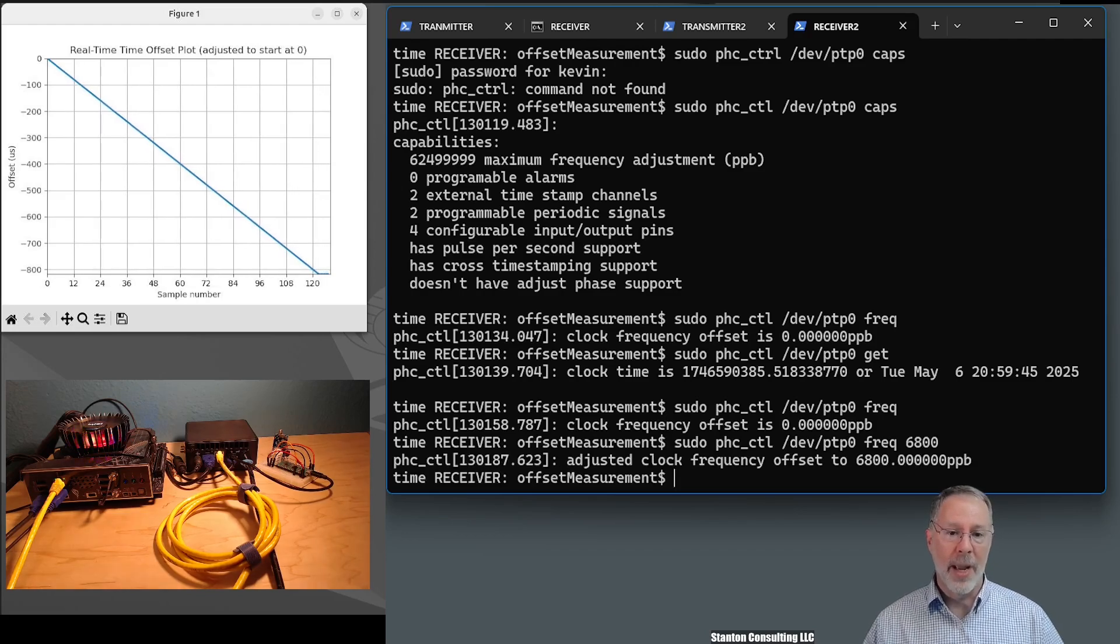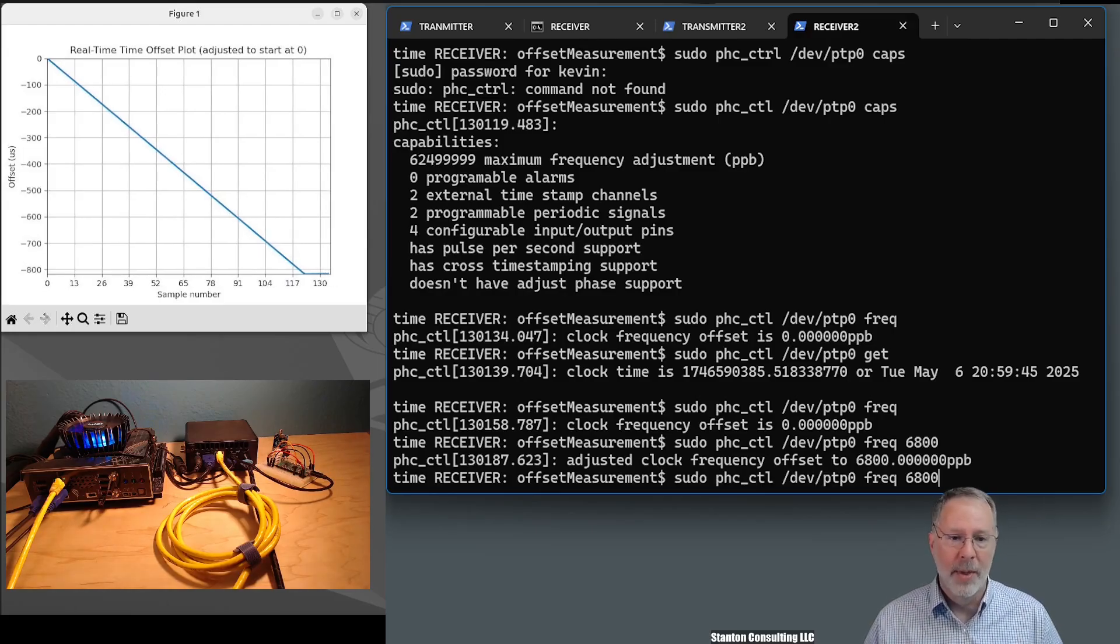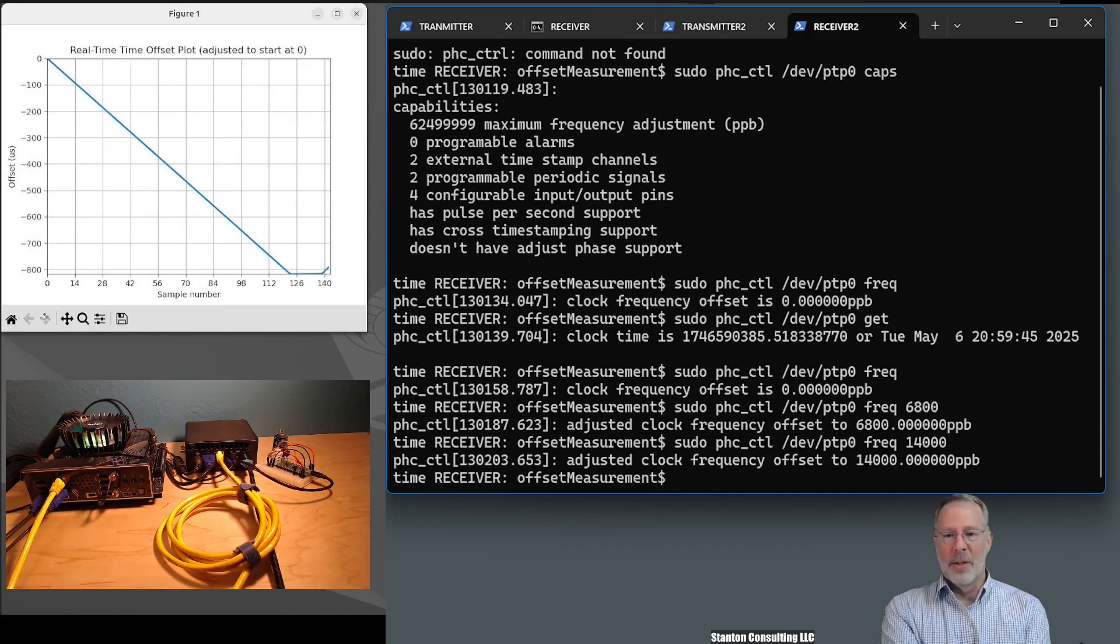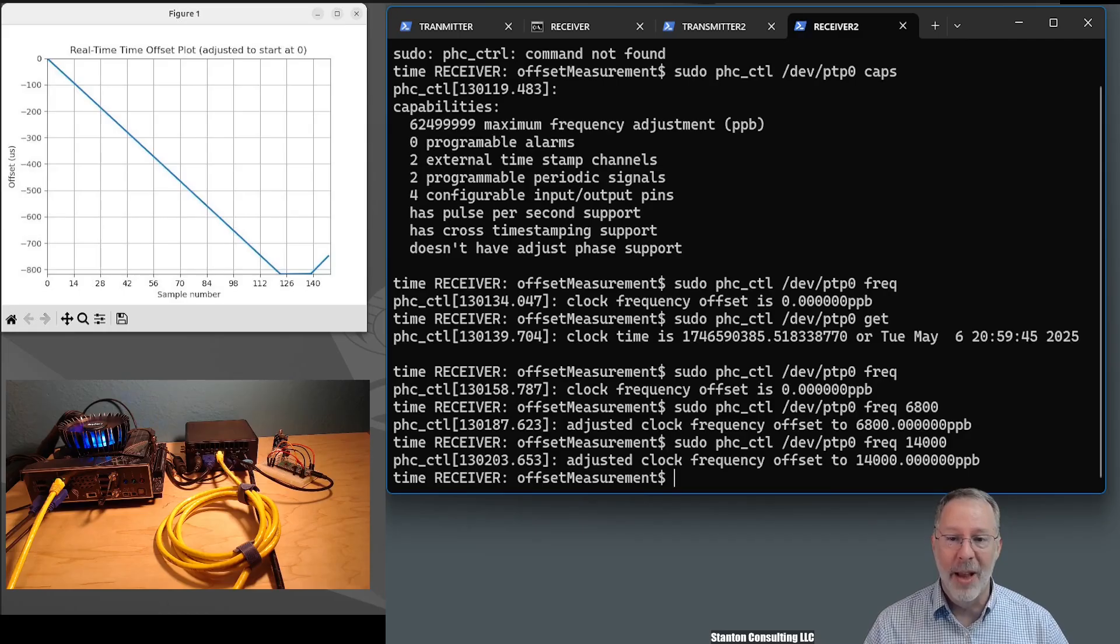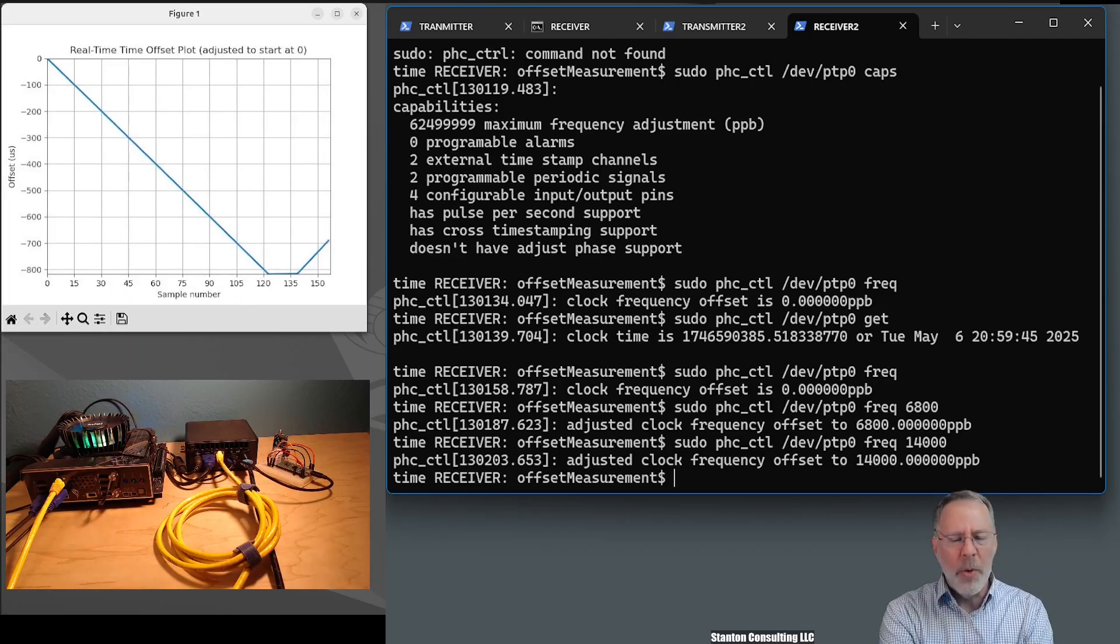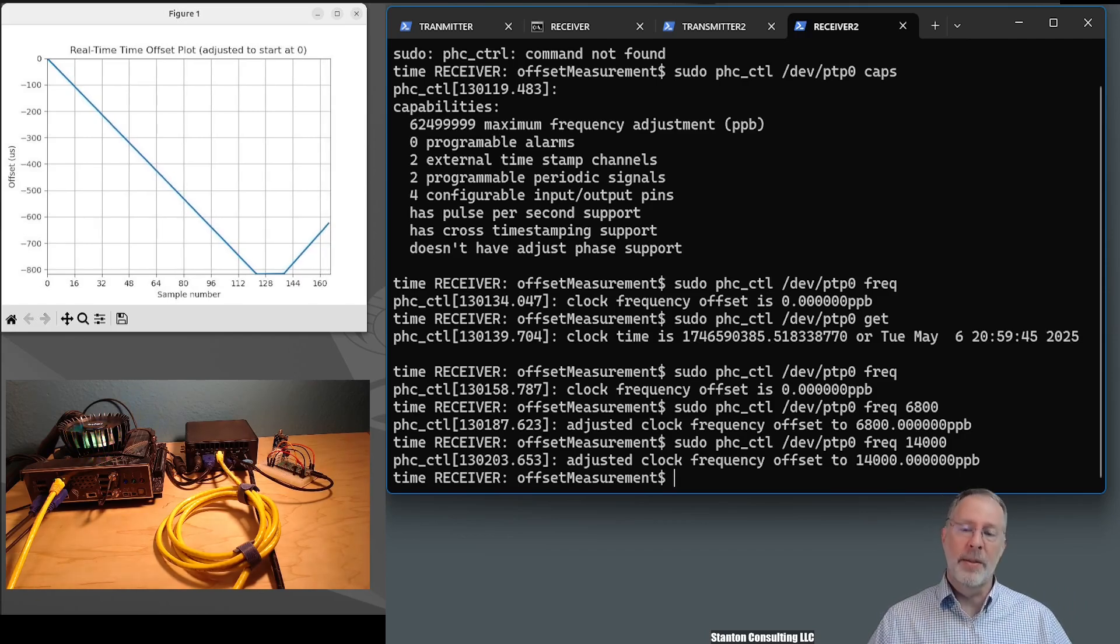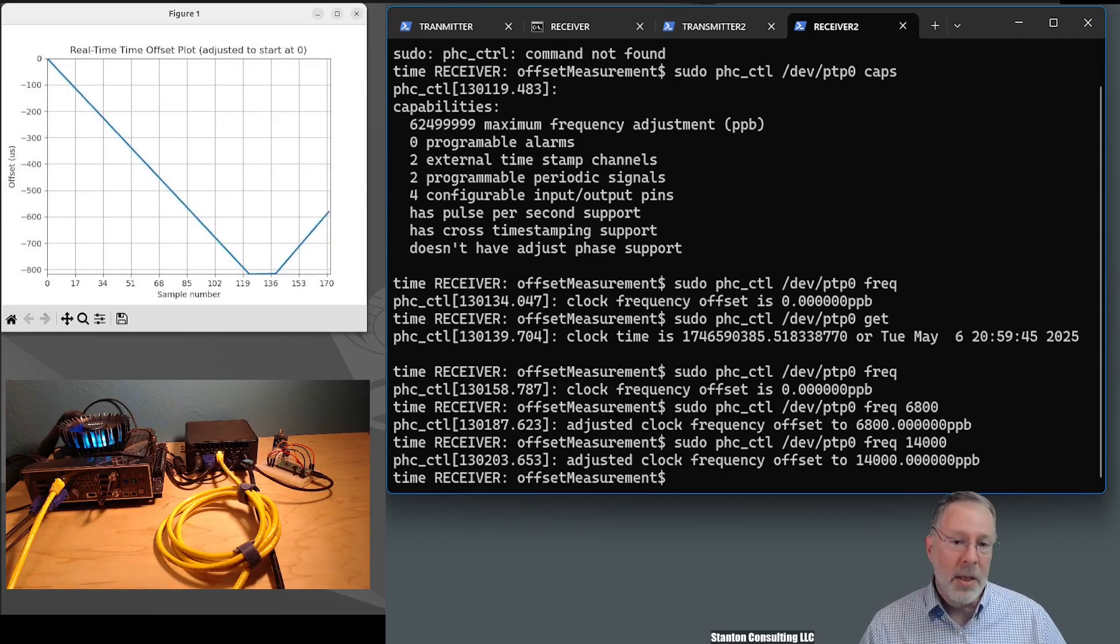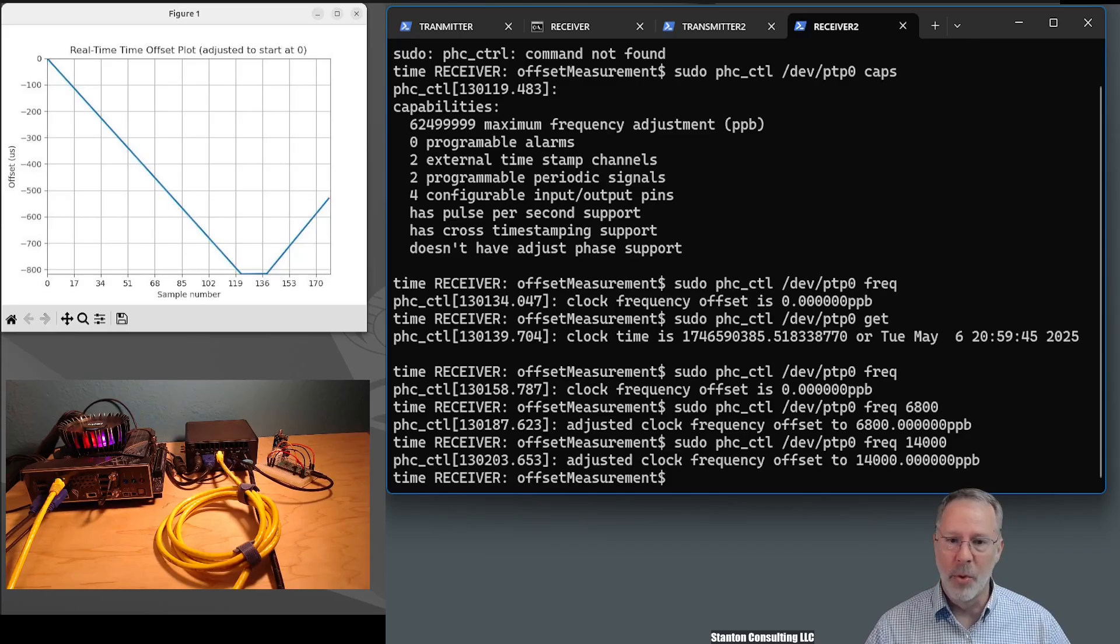What I can do, though, is I can add 6,800 parts per billion, 6.8 parts per million, to this time receiver, and it will adjust the rate at which the receiver is counting time. And you can see that it flattened out. In fact, if I make it 14,000, what we should see is it's ramping back up. Obviously, it makes no sense to do this manually in real life, and we really want a control system. Often, it'll be a PID controller. We'll experiment with that in the future. Maybe some reinforcement learning model. I think that would be pretty interesting as well. What we can see is that the offset is affected by the frequency. The frequency is affected by the temperature and other things. And we can change the frequency in a programmatic way or manually from user space. And we'll do that in the future.